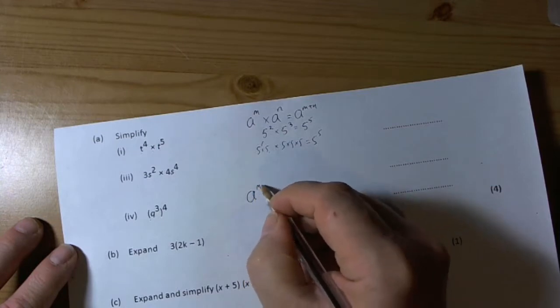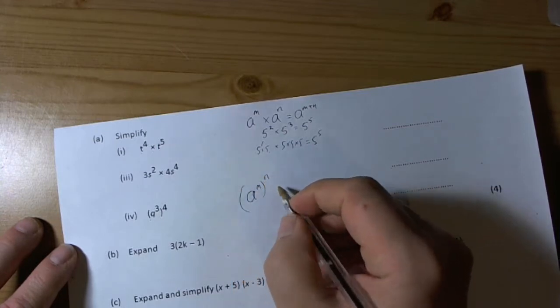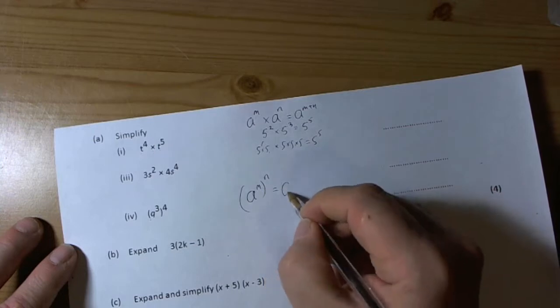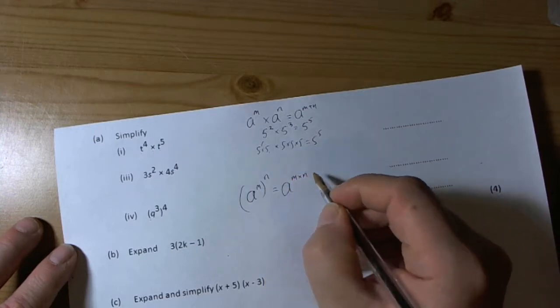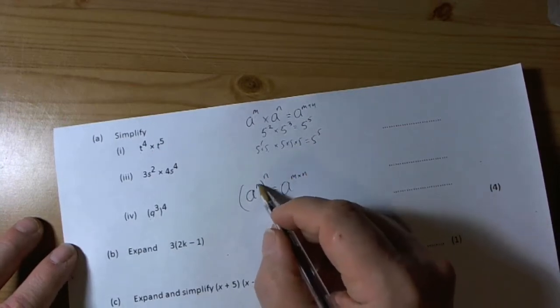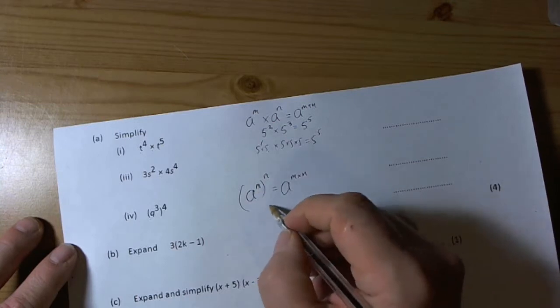We've got to remember our other rules, that some base to the power of m, when that is raised to another power, then the rule says that we can take the two powers and multiply them when one has been raised to the power of another one.